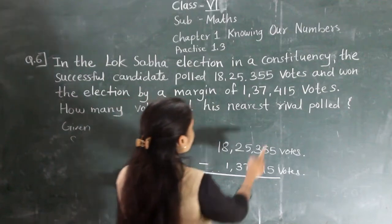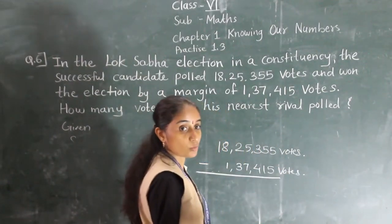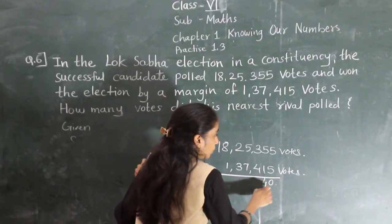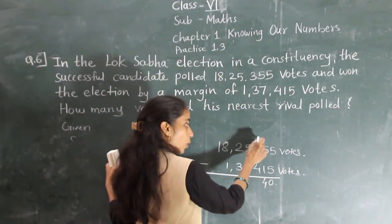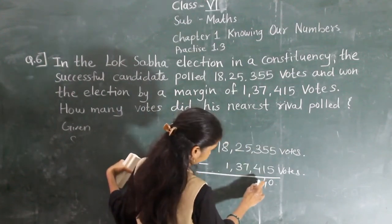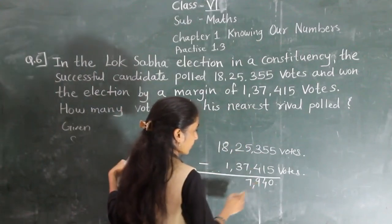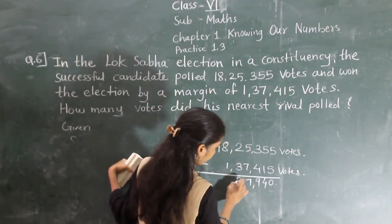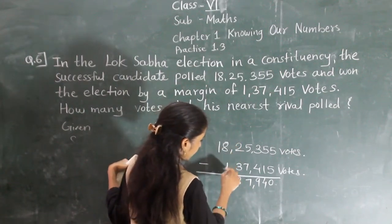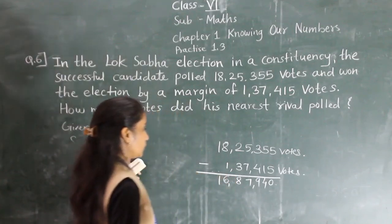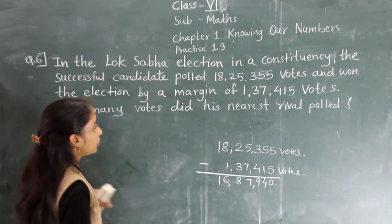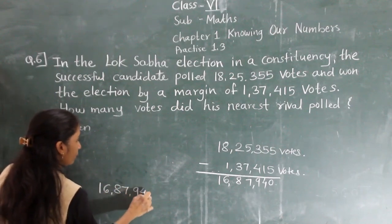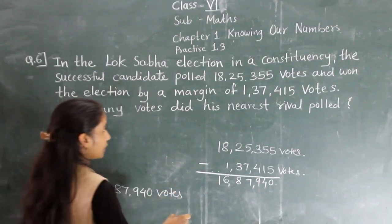So 18,25,355 minus 1,37,450 equals the nearest rival's votes. Subtracting: 5 minus 5 is 0; 5 minus 1 is 4; 3 minus 4 not possible, borrow — 13 minus 4 is 9; 40 minus 7 is 7 — wait, borrow: 11 minus 3 is 8; 7 minus 1 is 6. The nearest rival got 16,87,905 votes.